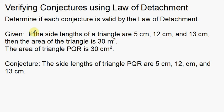We have this given: if the side lengths of a triangle are 5 centimeters, 12 centimeters, and 13 centimeters, then the area of the triangle is 30 meters squared. Now think about that statement — we're talking about the area of a triangle. The area of a triangle is one half base times height.